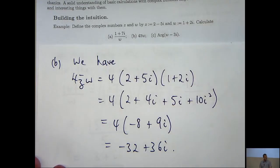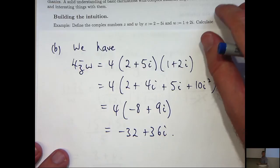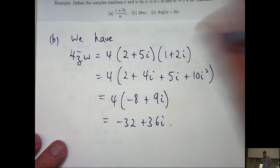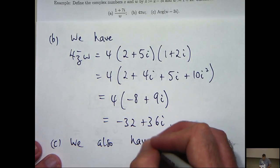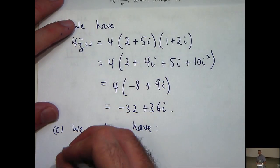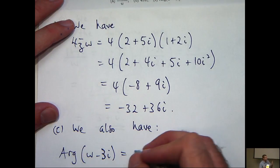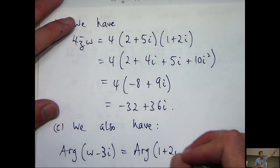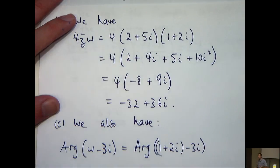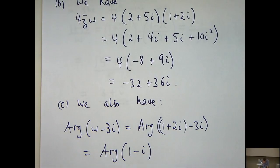Okay lastly we want to calculate the principal argument of the complex number w minus 3i. So how do we do that? Okay. So let's simplify w minus 3i first. And I can see that I'm going to get 1 minus i in here. So I'm after the principal argument of 1 minus i.